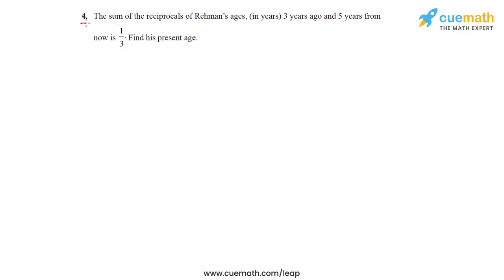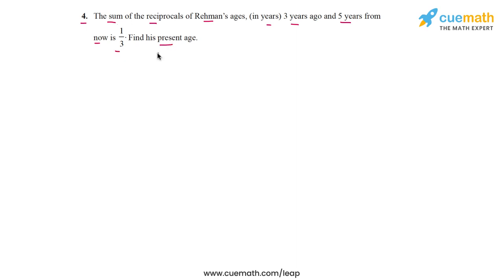In question 4 of this exercise, the problem statement says: the sum of the reciprocals of Rehman's age in years, 3 years ago and 5 years from now, is 1/3. Find his present age.